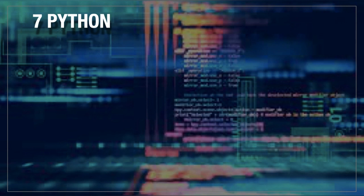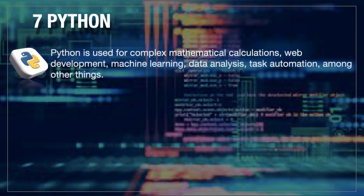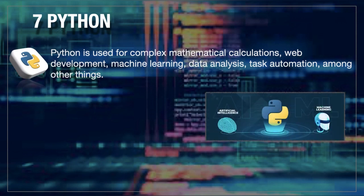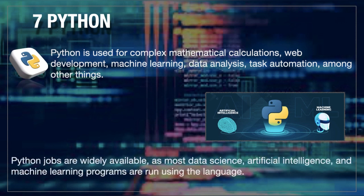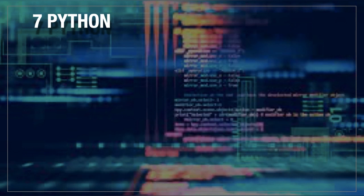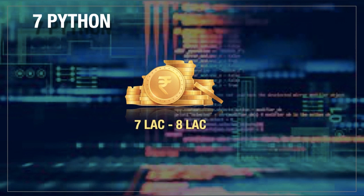The next language is Python. Python is used for complex mathematical calculations, which is the reason it is used for machine learning, AI, data analysis, task automation, and many other things. It is mostly useful for AI and machine learning. It is a very popular language because of the technologies it supports. If you implement AI or ML related tasks, you have to write code in Python. If you know Python, you get 7 to 8 lakh per annum — that's big money.